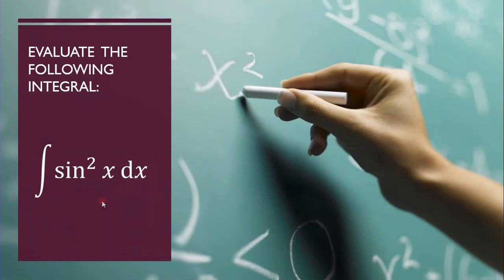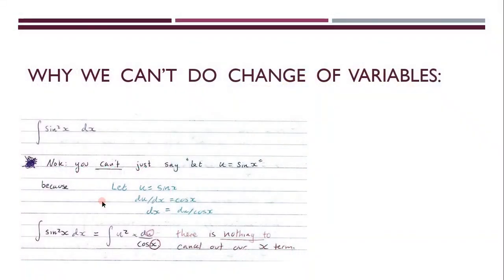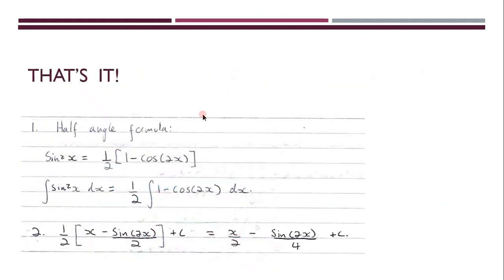So evaluate the following integral, sin squared x. So this is why we can't do a change of variables. So if we let u equal to sin x, what would happen is that we've got a mixture of variables. We've got u and we also have x. There's nothing to cancel out our x term. So this is why we don't do change of variables here.